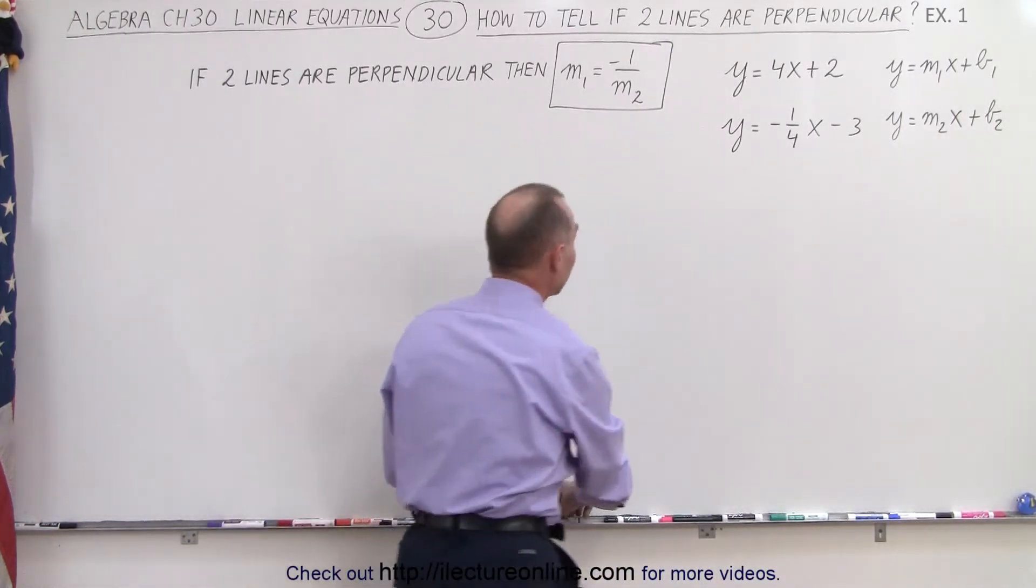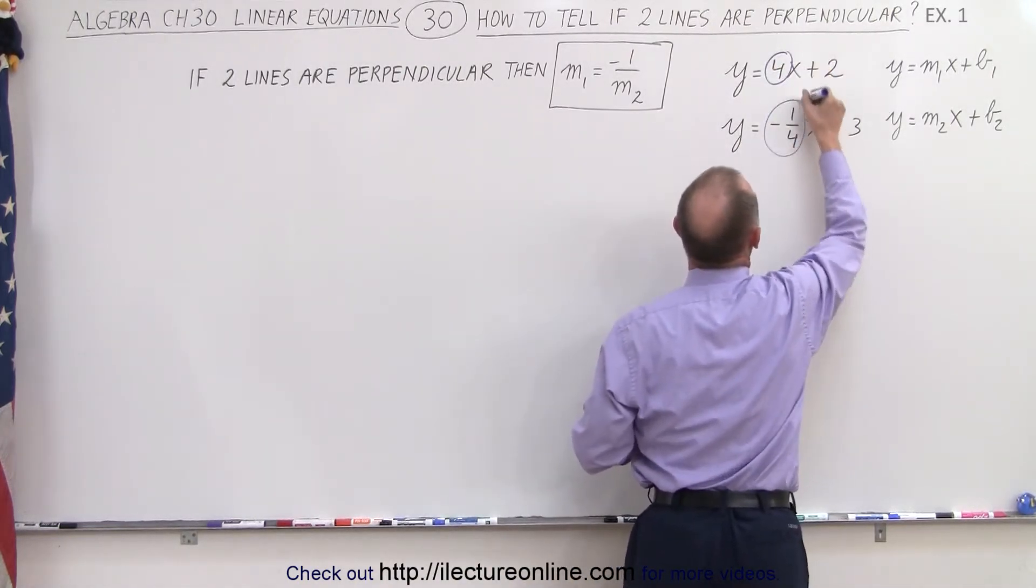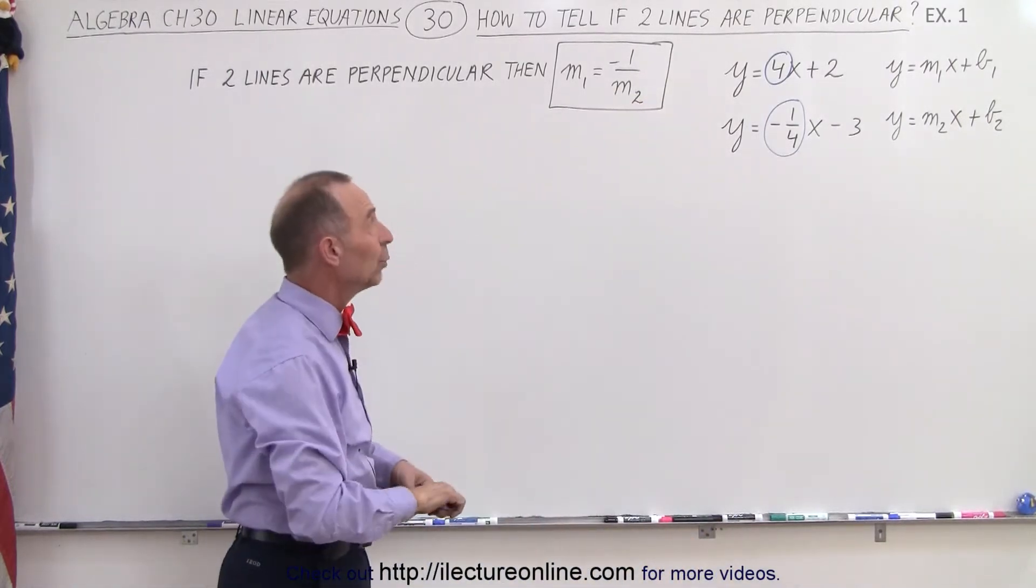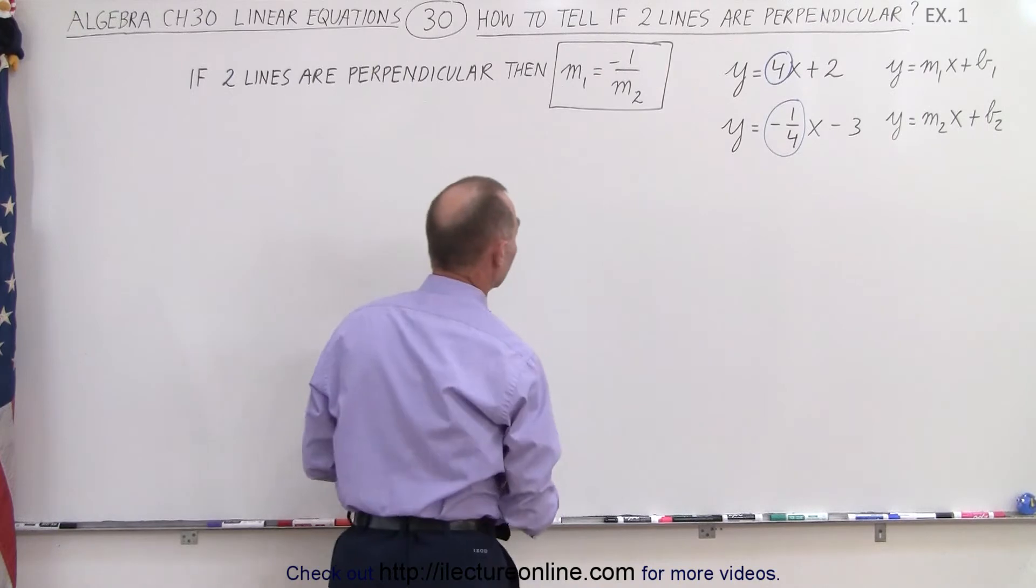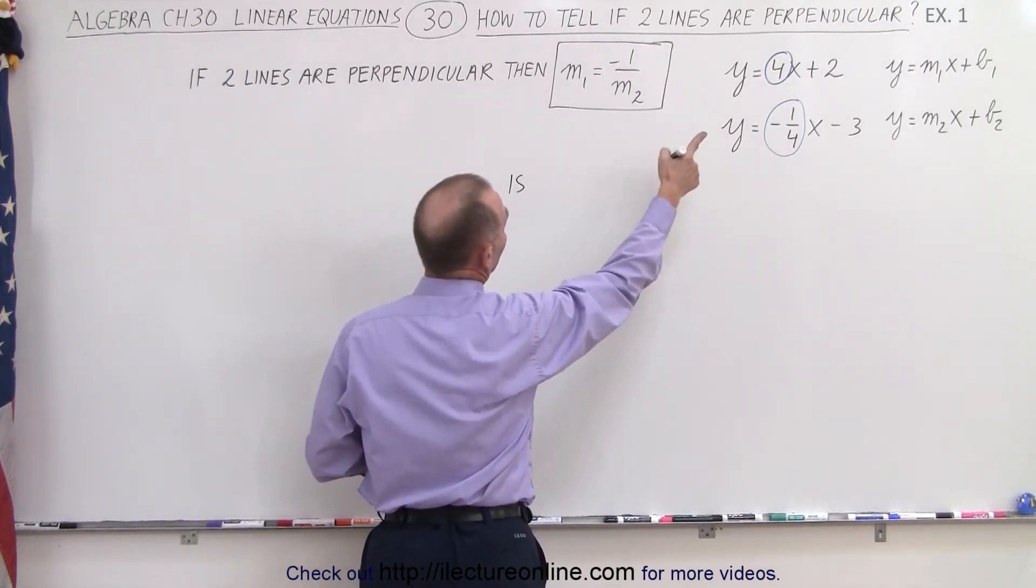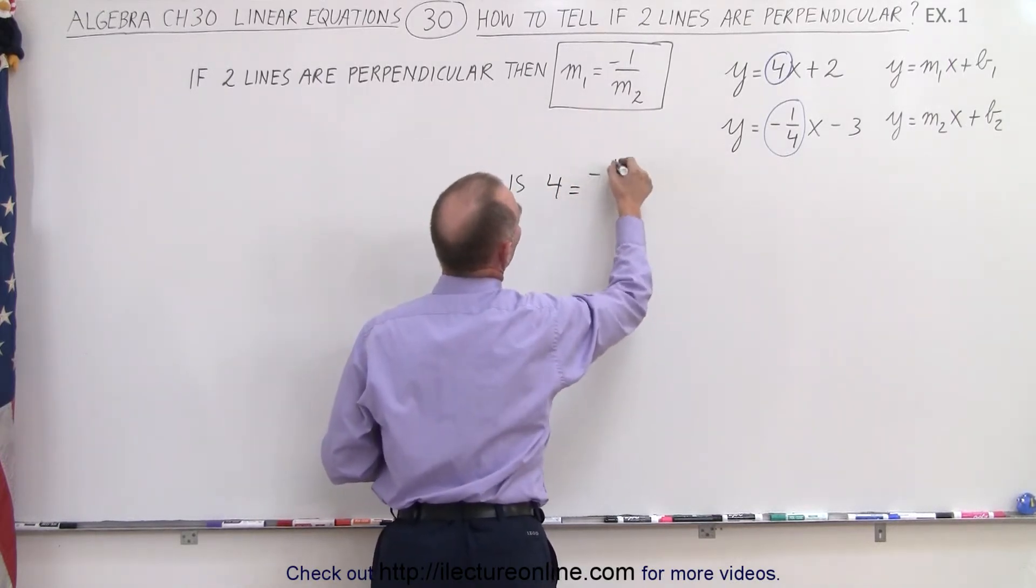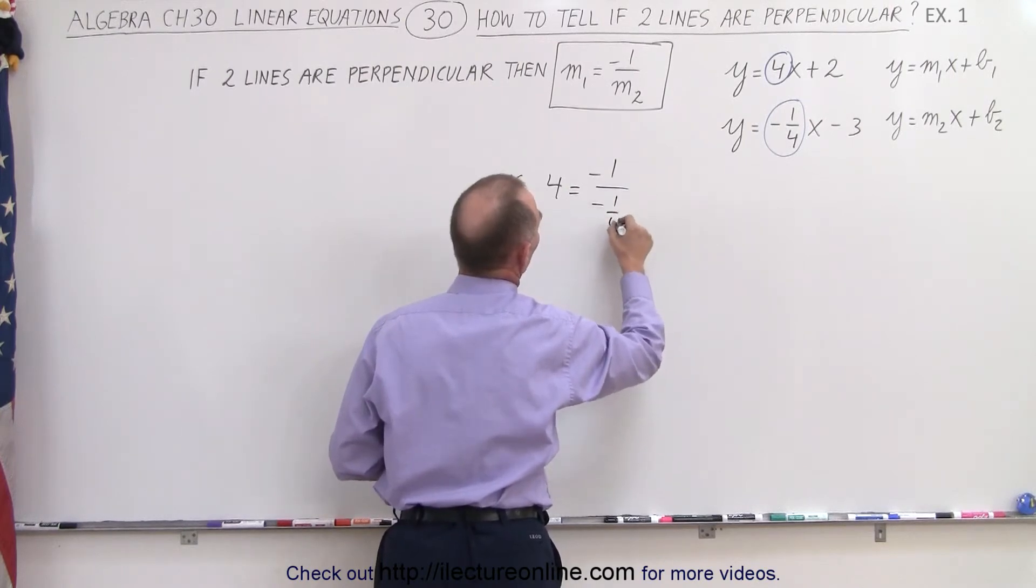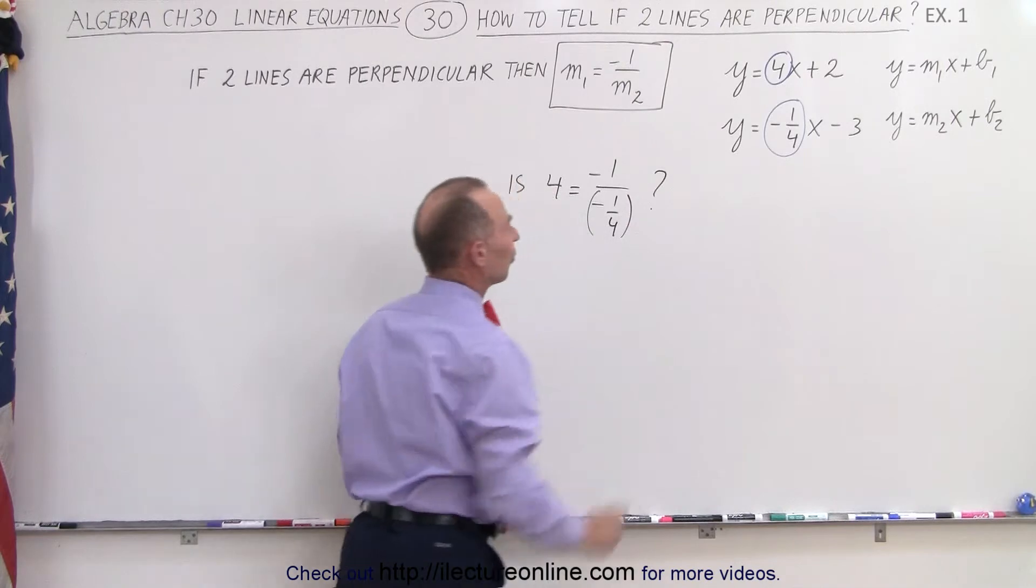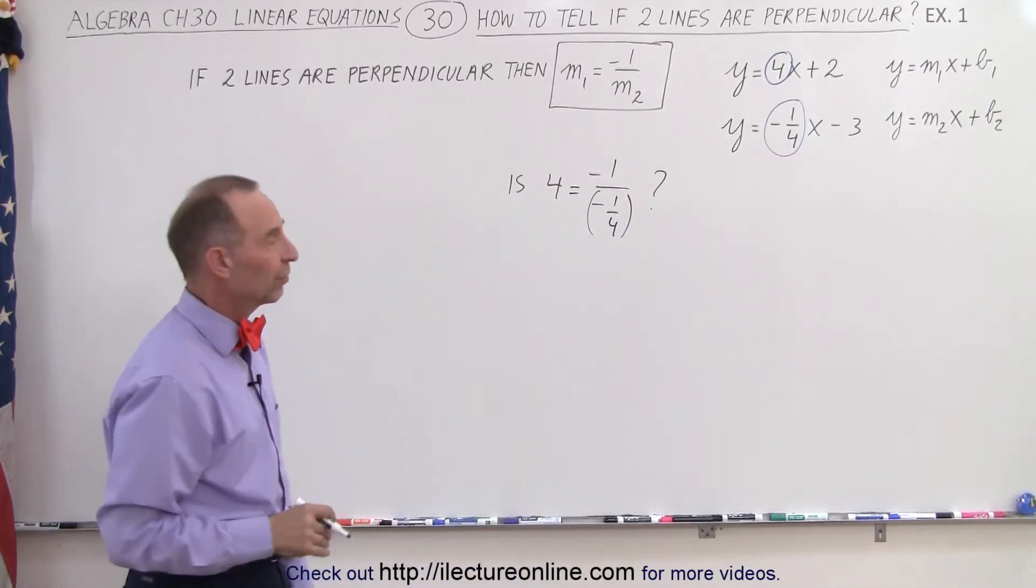All we have to do is take a look at the slope of one line and the slope of the other line and see if this condition is indeed true. If that condition is true, then we know the lines are perpendicular. So the question is: is m1, which is 4, equal to negative 1 over m2, which is minus 1/4? If the left side equals the right side, then the two lines are perpendicular.